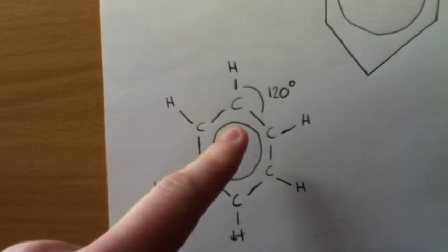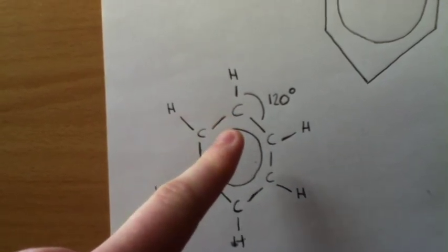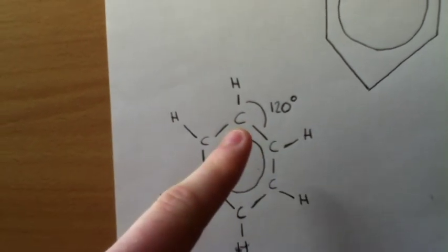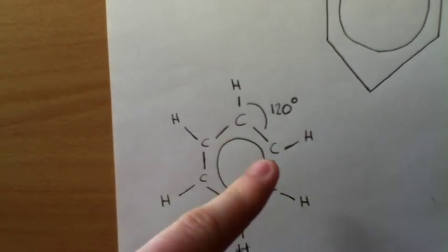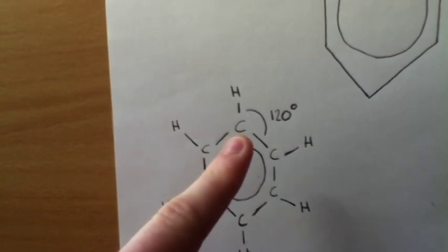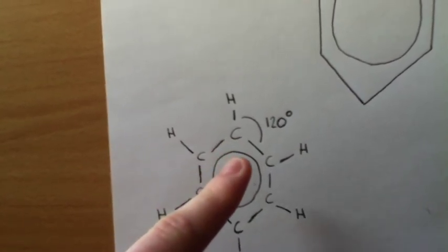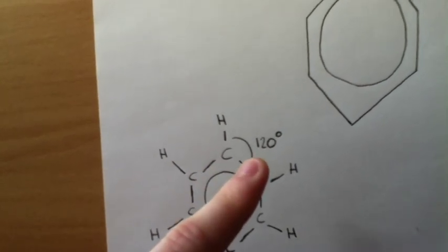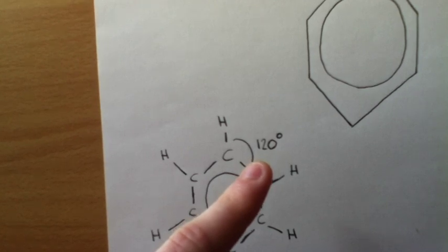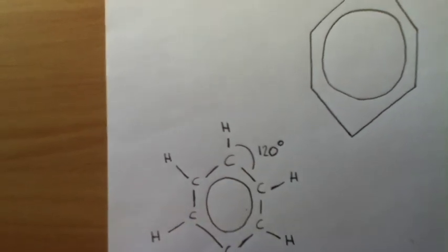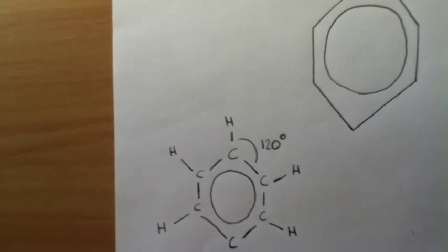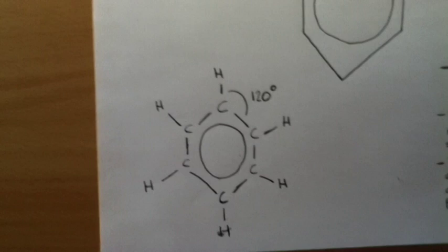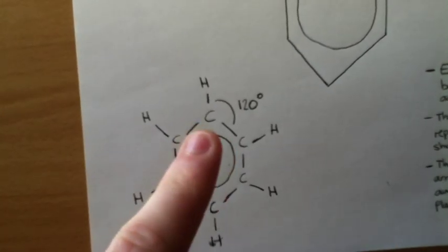First of all, we've got carbon atoms in a ring and each carbon atom is bonded to two carbon atoms and a hydrogen atom. Because there are three areas of electron density around each atom, we get this angle of 120 degrees. This question does come up quite a lot on both OCR-A and OCR-B papers. It's key to remember we've got three areas of electron density.